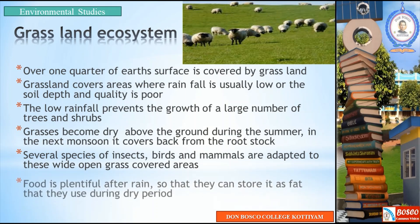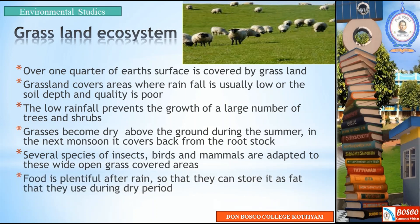Food is plenty after rain, so animals can store it as fat, which they use during the dry period. This is an important adaptation found in the grassland ecosystem.